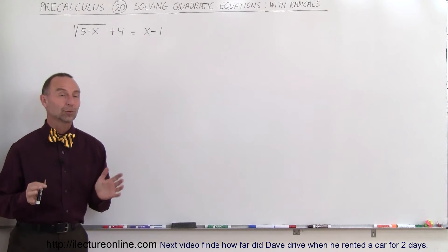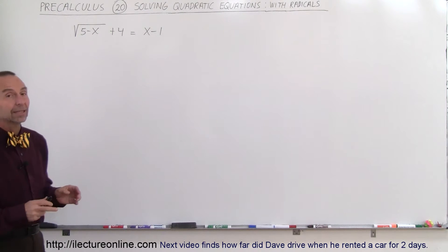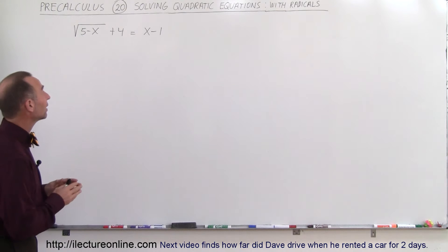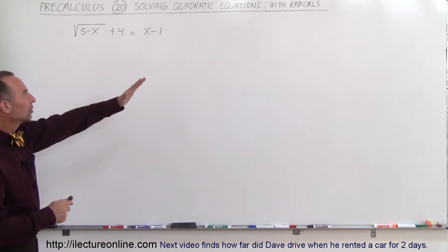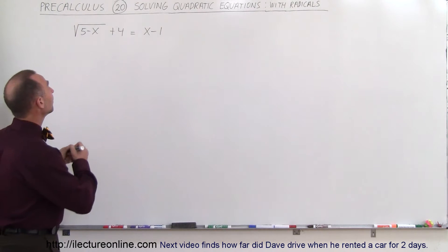Welcome to Electron Online. Now we're going to do an equation that has a radical in it. The rule of thumb is that if there's a single radical, you want to move that to one side of the equation and everything else to the other side of the equation. So let's try that.